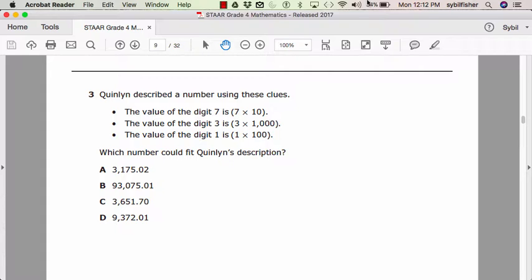A, 3,175.02. B, 93,075.01. C, 3,651.70. D, 9,372.01. If you need to hear this question again, rewind until you can hear the question read over. If not, pause your recording after each question and find your answer.